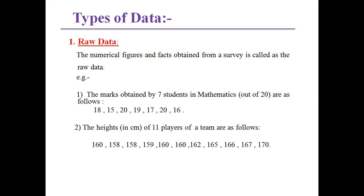For example, in the first example we have given the marks of seven students in mathematics, and in the second example we have given the height of 11 players of a team. In both examples, we have given only the numerical values, so it is raw data.